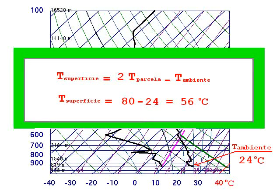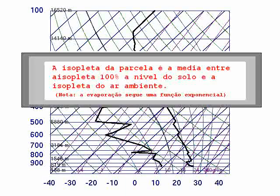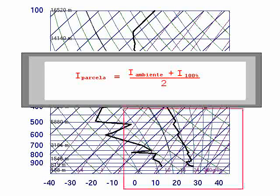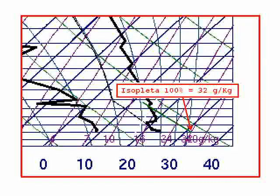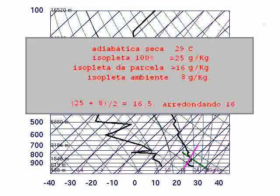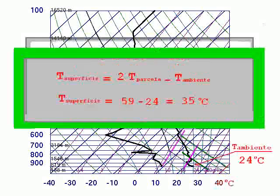Proceeding by trial and error, we seek a dry adiabatic that when crossing the state line satisfies the isopleth equation: isopleth_parcel = (isopleth_ambient + 100% isopleth at ground level) / 2. Found: temperature of the parcel equal to 29 degrees Celsius, with an isopleth of 16 grams of steam per kilogram of air. Calculating the surface temperature yields 35 degrees Celsius wet — a difference of 56 minus 35 equal to 21 degrees Celsius.